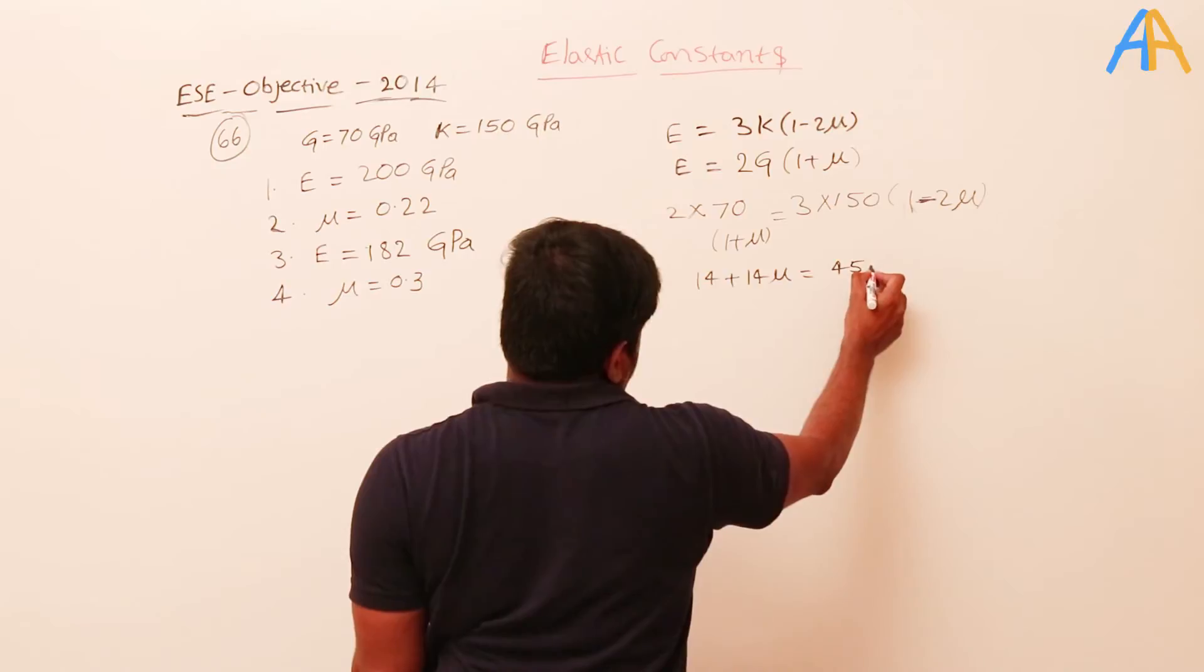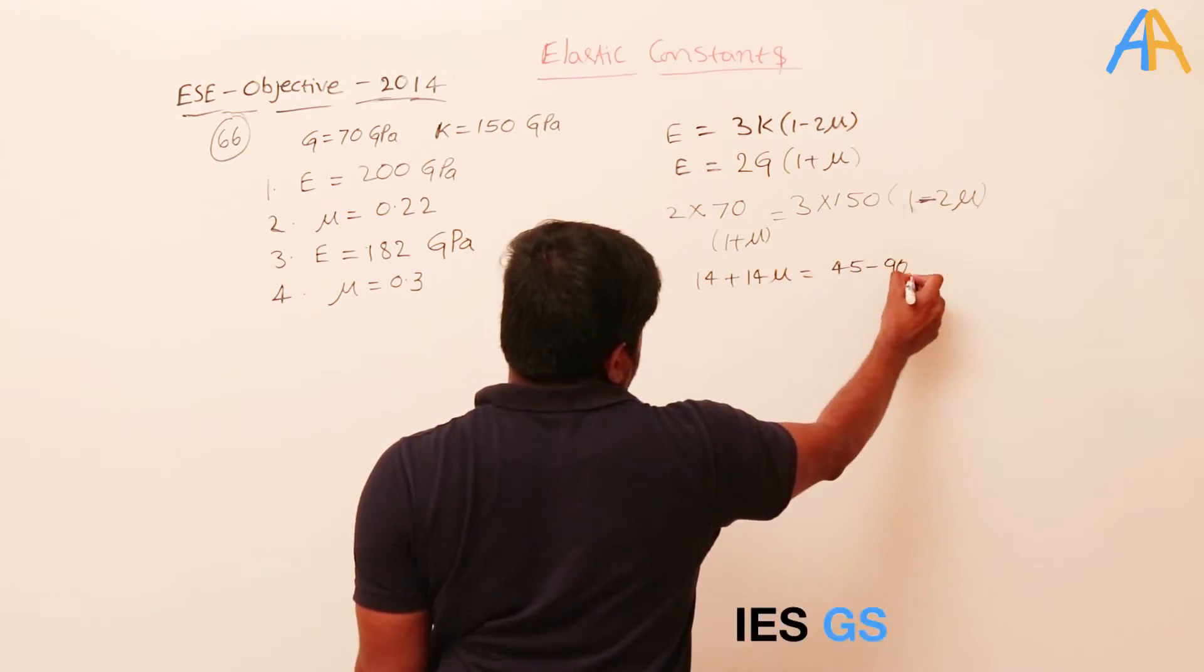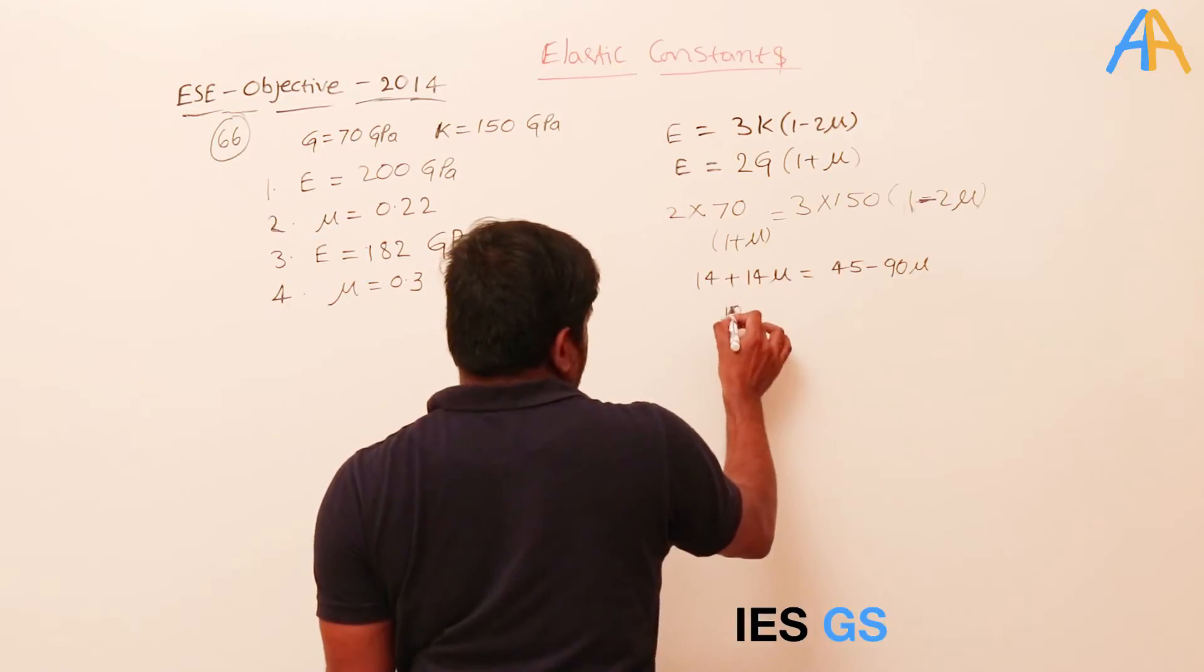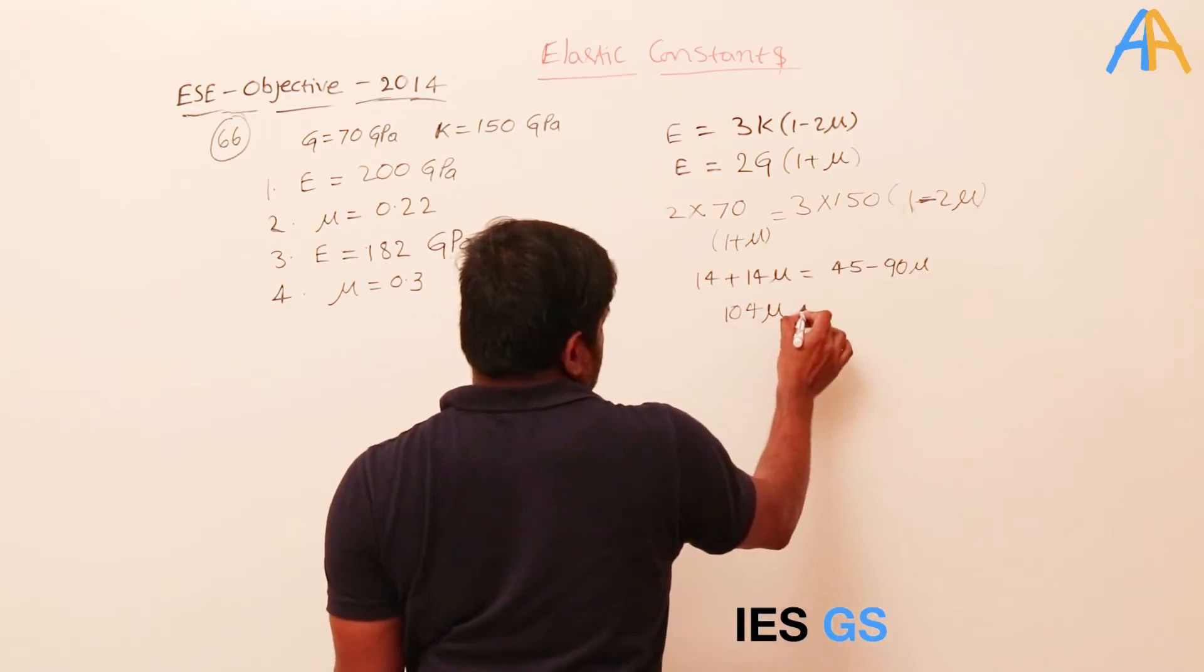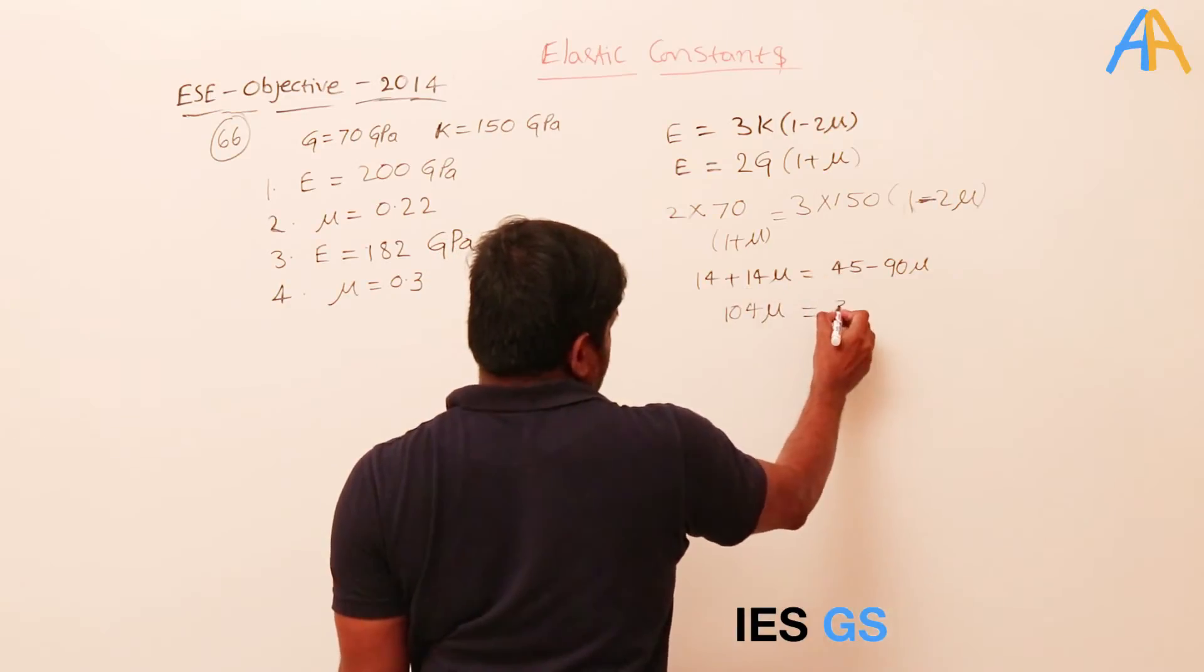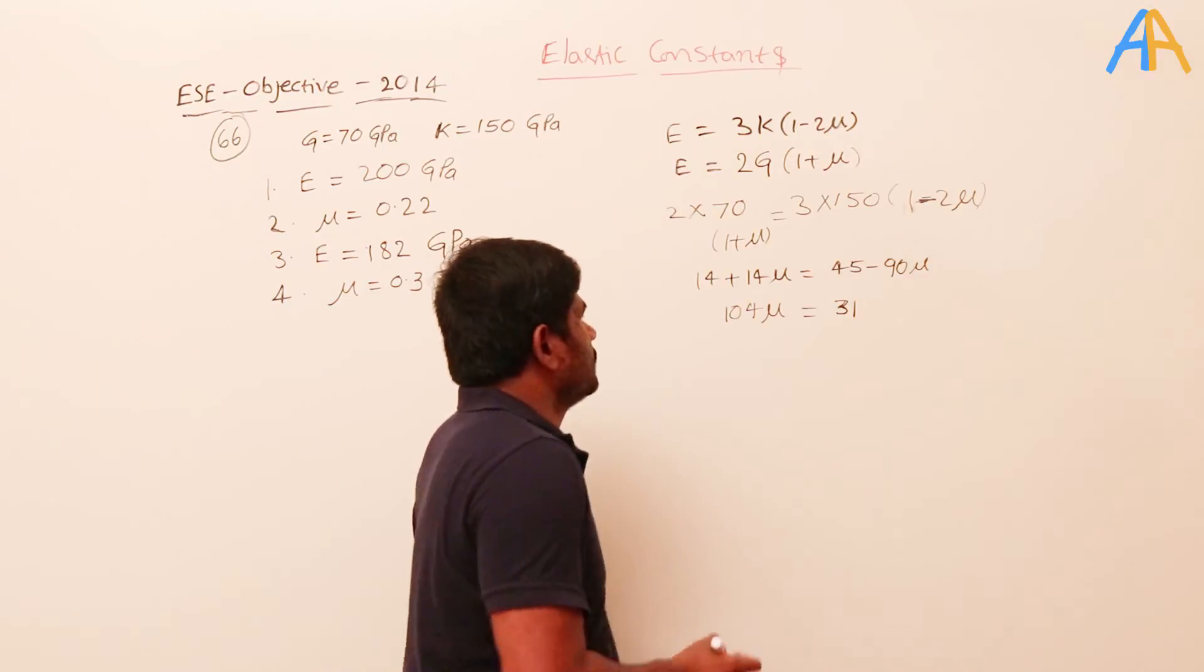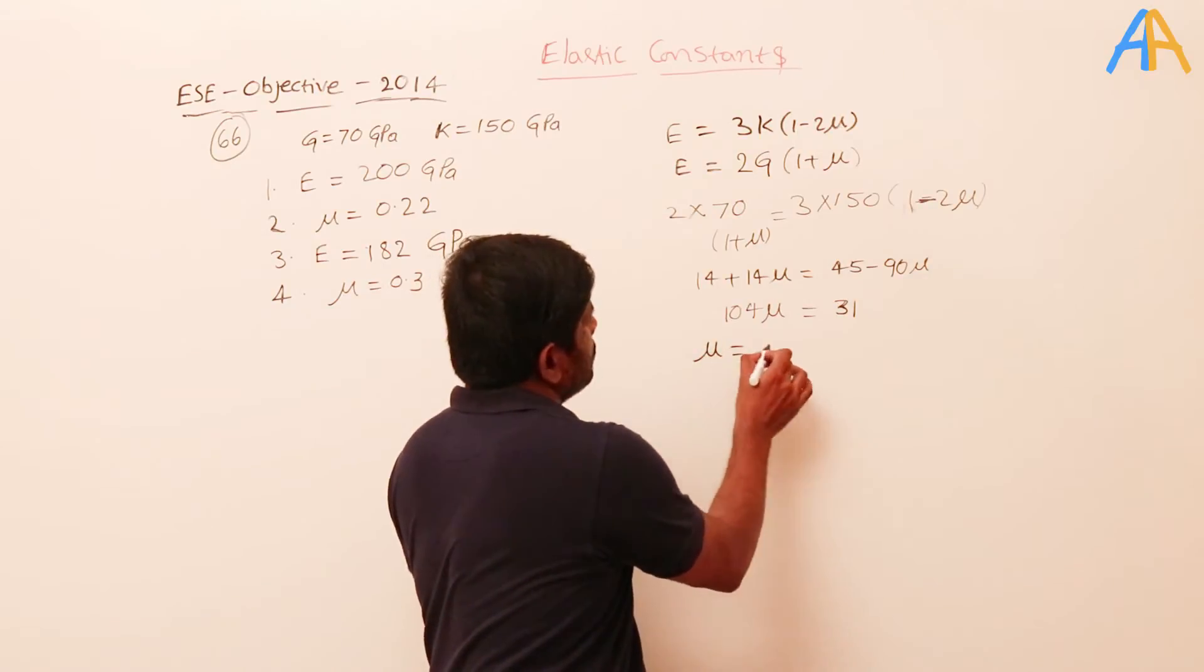When it comes to this side, 104μ will become how much? 31. 31 plus 14 is 45. So here μ value is 31 divided by 104, which equals 10 to the power minus 1.